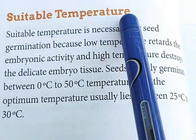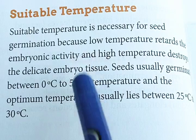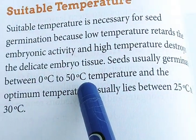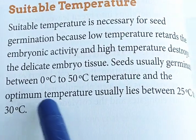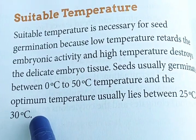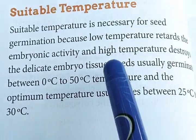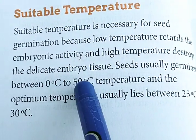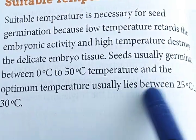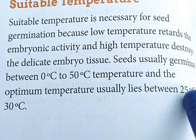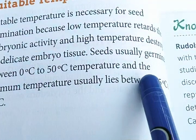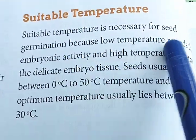Underline this: the temperature range required for germination is 0°C to 50°C, and the optimum temperature usually lies between 25°C to 35°C — that is the boundary of temperature normally required for seed germination.